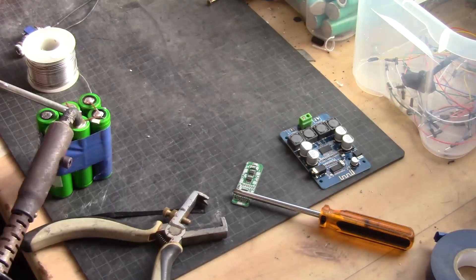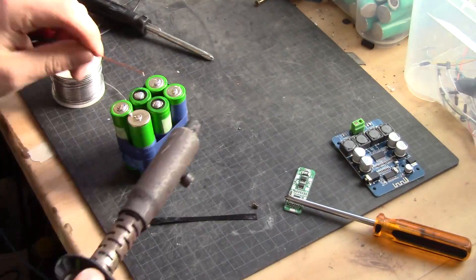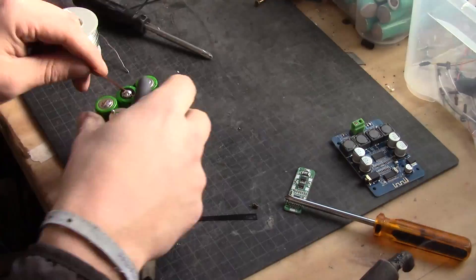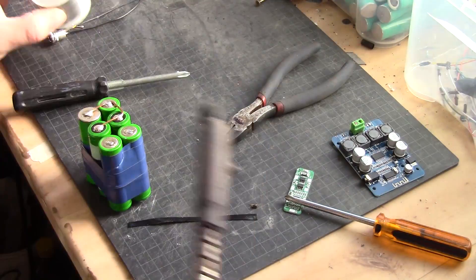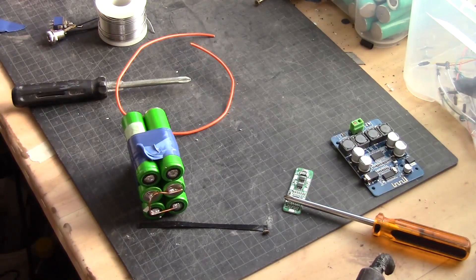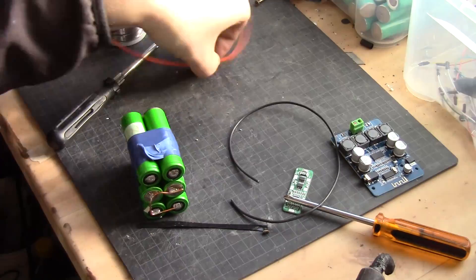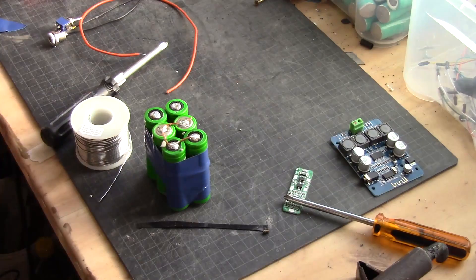And this is 3s2p. So I'm getting roughly 4Ah at 12V. I'm using 1.5mm copper wire in this case because that was what I had laying around. Adding the cables, positive and negative first.